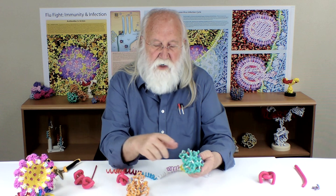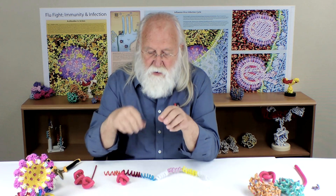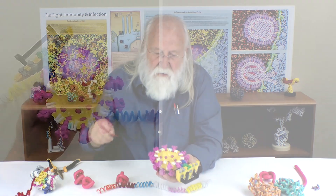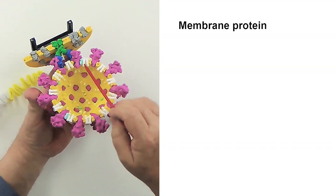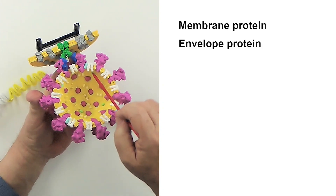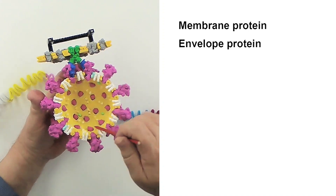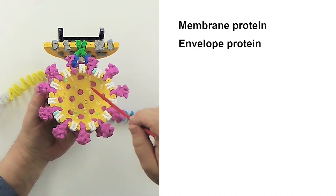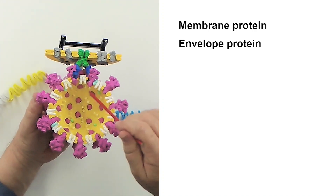We'll come back to this in the next video when we talk about what we can do to protect ourselves. This is an example of an antiviral small molecule. Let's also mention some of the other proteins encoded by this RNA genome. There's a membrane protein, an envelope protein, both embedded in the membrane of the virus, and they have something to do with the way the spiral genome is packaged into the virion. And of course you know about the spike protein.